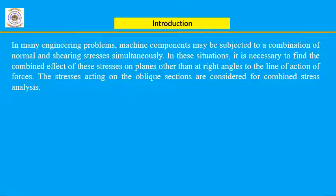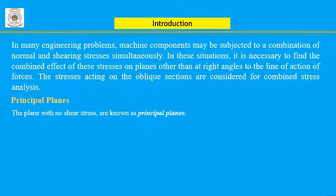Next: principal planes. It has been observed that at any point in a strained material there are three planes that are mutually perpendicular to each other, which carry direct stresses only and no shear stresses. Out of these three direct stresses, one will be maximum, another will be minimum, and the third is intermediate between the two. These particular planes which have no shear stress are known as principal planes.